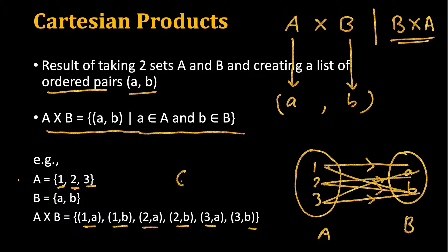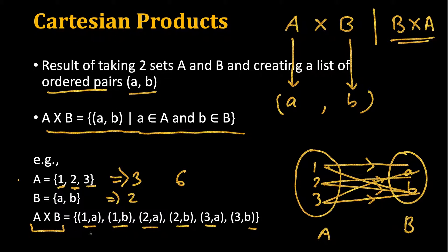So we have six ordered pairs in total. A had three elements and B had two elements, so the Cartesian product A cross B has six elements.